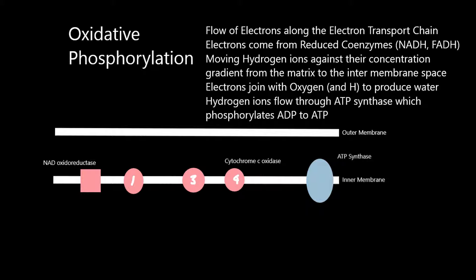The flow of those electrons moves hydrogen ions against a concentration gradient from the matrix of the mitochondria into the intermembrane space between the inner and the outer membranes of the mitochondria. The electrons join with oxygen and hydrogen to produce water at the end of the electron transport chain, and those hydrogen ions flow out again through ATP synthase, which then phosphorylates ADP to form ATP.